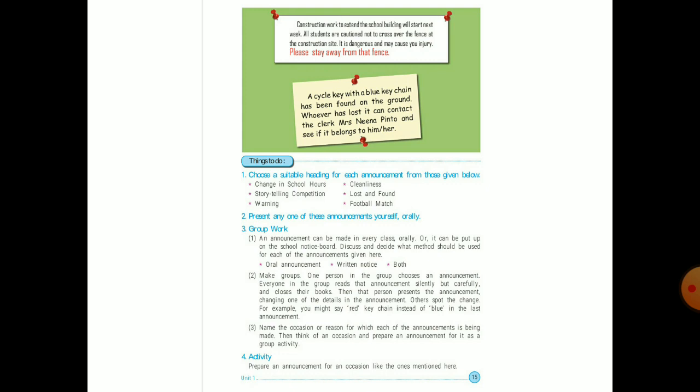And the last announcement is a cycle key with a blue key chain has been found on the ground. Whoever has lost it can contact the clerk, Mrs. Nina Pinto and see if it belongs to him or her. Whatever, something is found on the ground. And what is that? A cycle key. And it is with blue key chain.